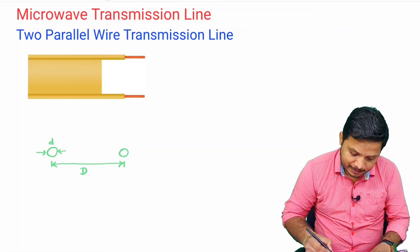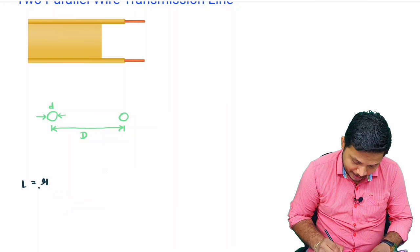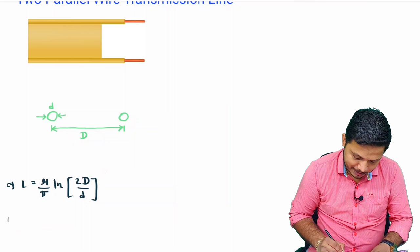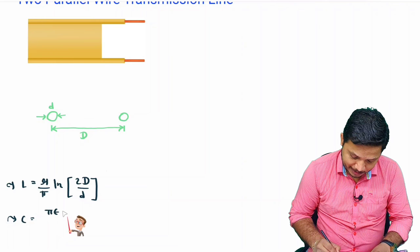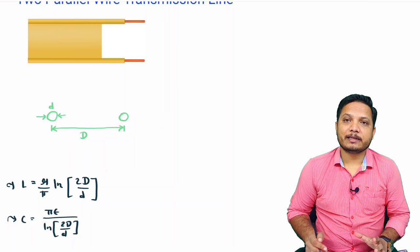The inductance of this two parallel wire transmission line is L equals mu divided by pi times ln(2D/d), where capital D is the separation and small d is the wire diameter. The capacitance is pi times epsilon divided by ln(2D/d). This is how inductance and capacitance are identified for the two parallel wire transmission line.